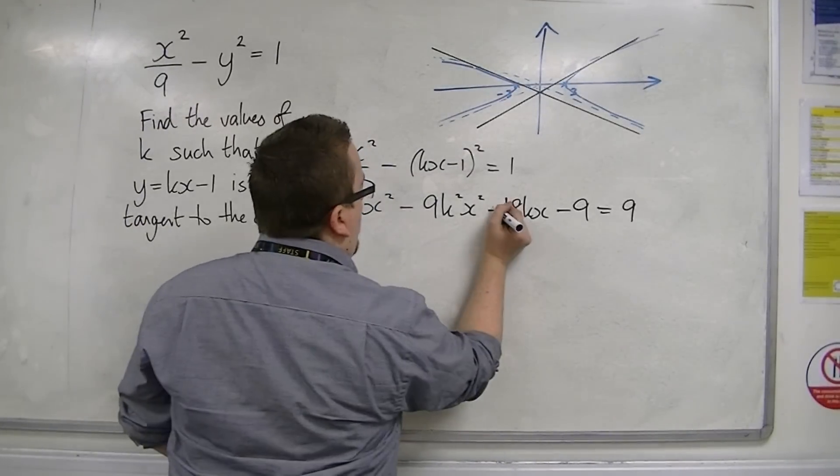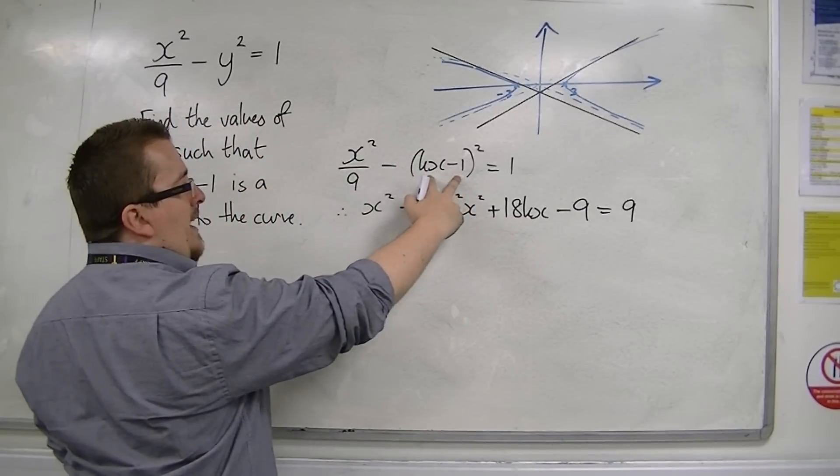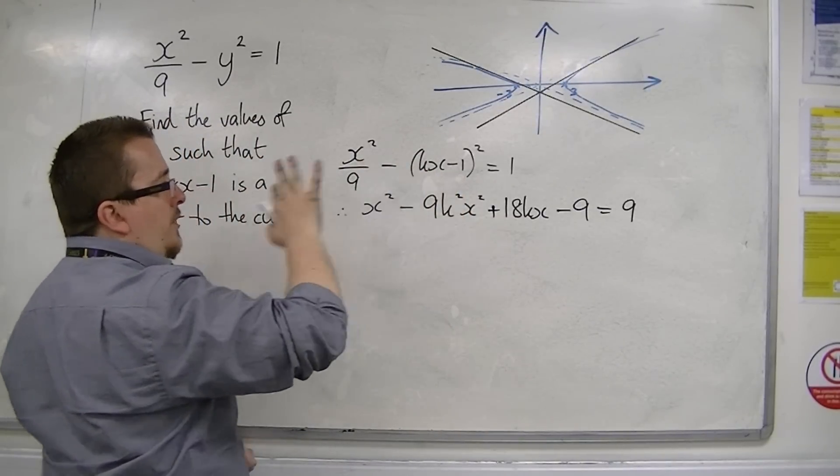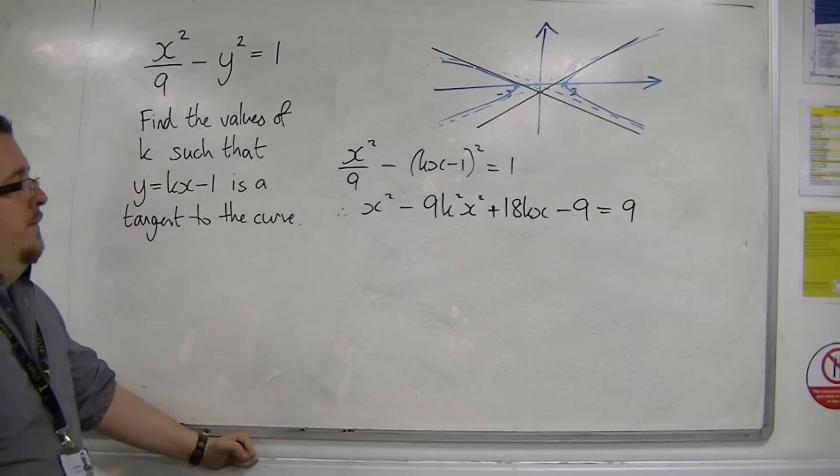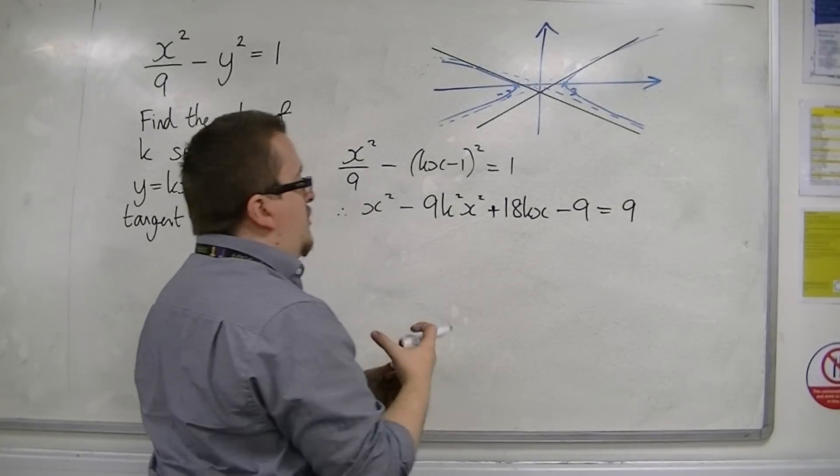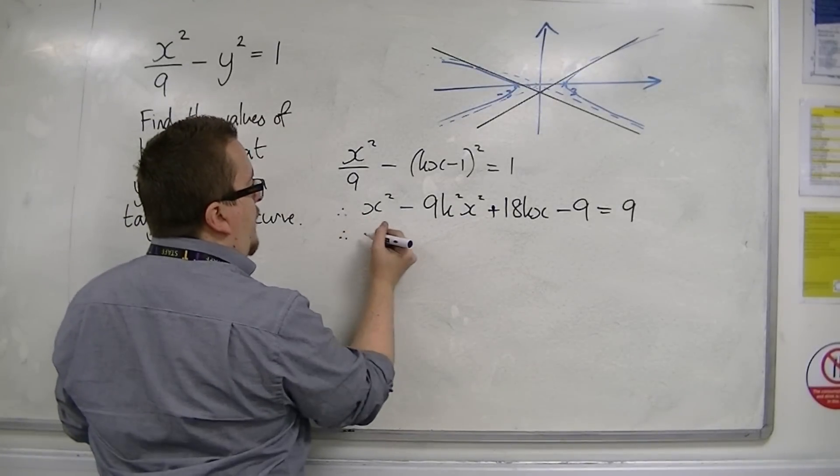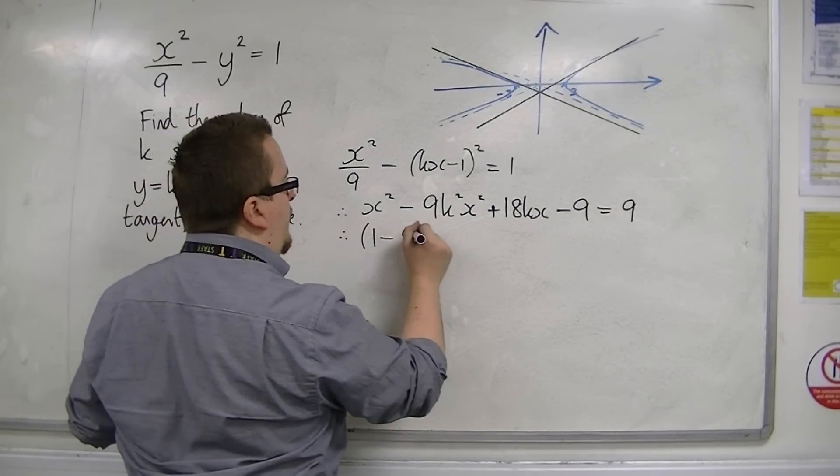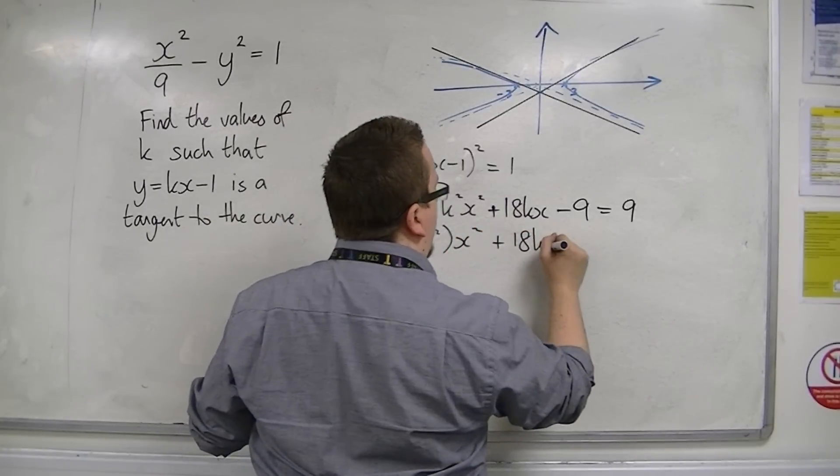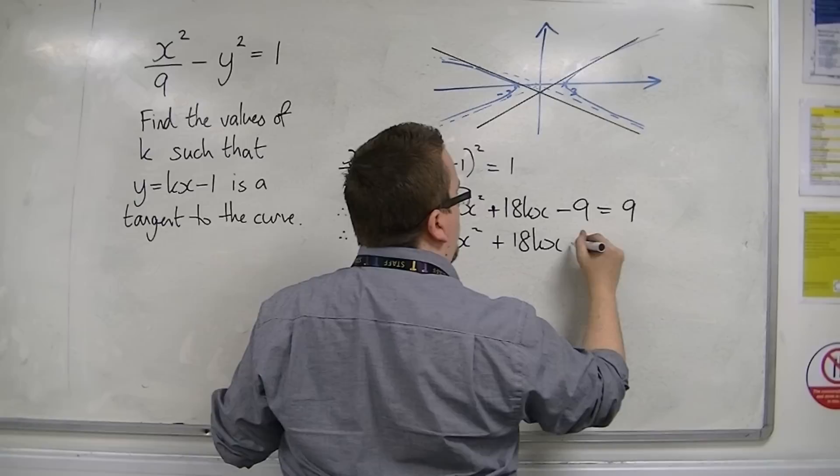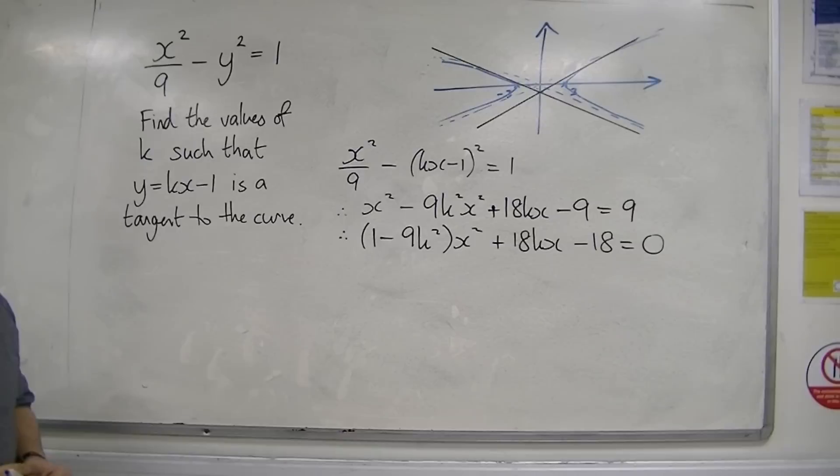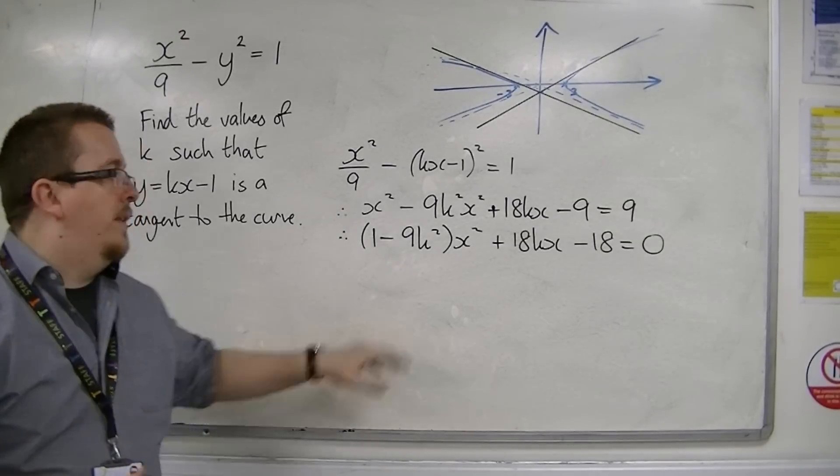I think that's going to be a plus, actually, because we're going to have kx times minus 1 twice. Yeah, that makes sense. Now, I'm going to throw everything onto the left-hand side. So I'm going to factorize these two bits. So I'm going to have (1 minus 9k squared) x squared plus 18kx. Take 9 from both sides, so take 18 is 0.